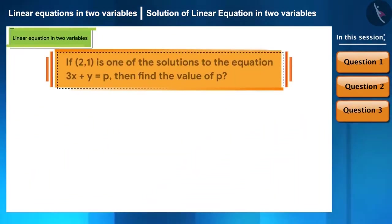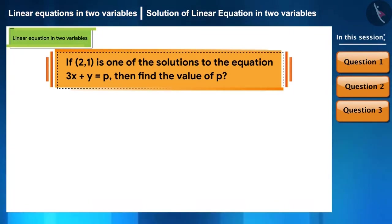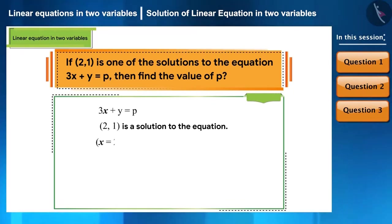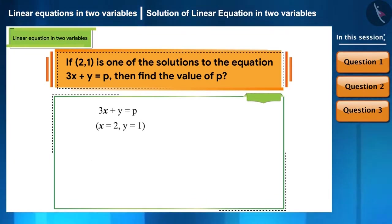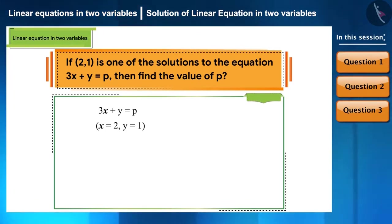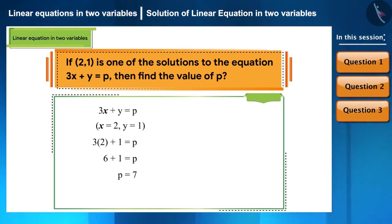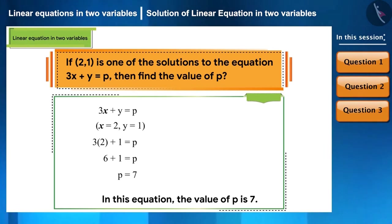If (2, 1) is a solution to the equation 3x plus y equals p, find the value of p. If x equals 2 and y equals 1 is a solution, then the RHS equals the LHS. Substituting: 3 multiplied by 2 plus 1 equals p, giving 6 plus 1 equals p, so the value of p is 7.